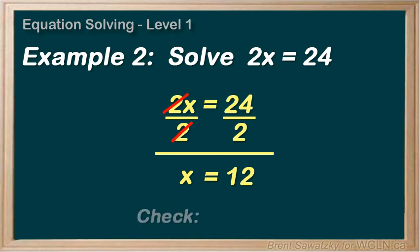Let's check our answer. That is, plug it back into the original equation. And we replace the x with empty brackets, and then substitute in our 12. And see what we have. 2 times 12 indeed equals 24. Confirmed.